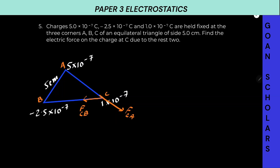Since this is an equilateral triangle, the angle between the two force vectors will be 120°. Why 120°? Because the interior angle is 60° and that forms a linear pair. Now let us write the force on C due to A, which equals K times the charges divided by the separation squared.